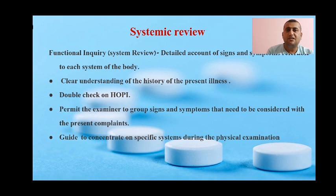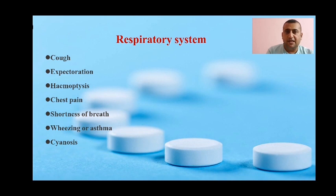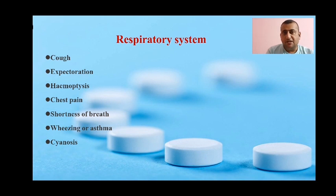Systemic review questions can be put as positive history or negative history. When reviewing the respiratory system, you should ask the patient about cough, expectoration, hemoptysis, chest pain, shortness of breath, wheezing or asthma, and cyanosis. If the patient's disease is attributed to the respiratory system, these are the signs and symptoms to elaborate in history of present illness as positive history.